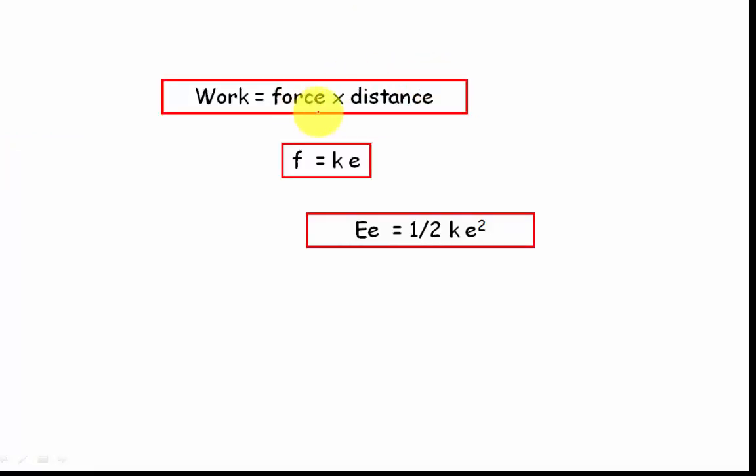So just to summarize, work is force times distance. The force on a spring can be given by this equation. The distance is also the same as the extension. So when we just put all this together, you get this equation for energy stored in the spring. I hope you found this easy to understand. If you have any comments, please make them. Thanks for watching.